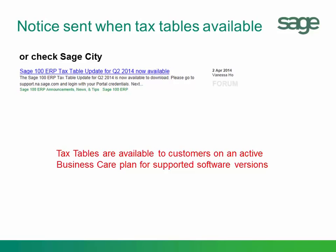Many states do not report their changes until late in the year. The tax table update posts on the Sage webpage for you to download. As tax changes are received from the various government entities, the tax tables will be revised on the website. You should check at the end of January to verify you have the most updated version. If changes are received throughout the year, subsequent tax table updates will be released, and you can always check the Sage website.